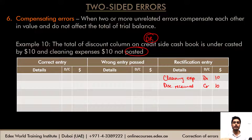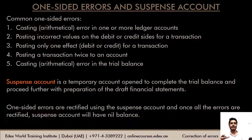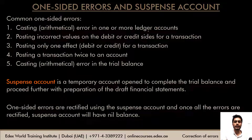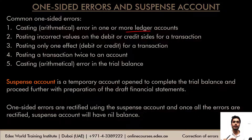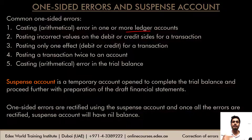Those were the different types of two-sided errors. Coming to one-sided errors — these are errors that lead to a difference in the trial balance. Common causes include: casting or totaling errors in ledger accounts; posting incorrect values; omitting one side of a transaction (either debit or credit); posting a transaction twice to an account; or a totaling error in the trial balance itself.